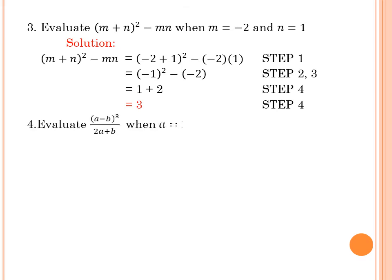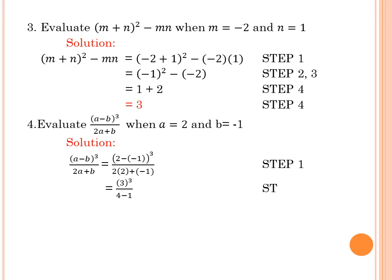Number 4: Evaluate the quantity of a minus b cubed over 2a plus b when a is equal to 2 and b is equal to negative 1. Solution: The quantity of a minus b cubed over 2a plus b is equal to, substitute the value of a and b, which is 2 minus negative 1 cubed over 2 times 2 plus negative 1 for step 1. And simplify the numbers in the parenthesis. We have 3 cubed over 4 minus 1 for step 2 and 3. And 3 cubed is 27 over 3 for step 4. And lastly, 27 over 3 is equal to 9, the final answer.